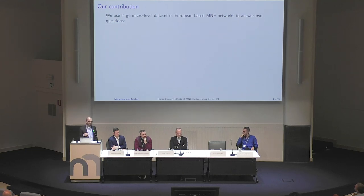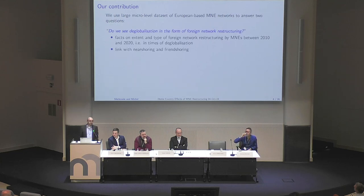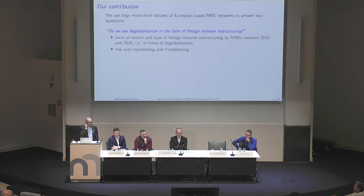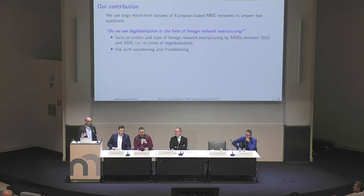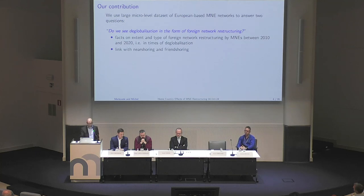We have many results in the paper, but for the sake of time I'm going to distill two questions we can answer using our data. We use a large micro-level data set of European-based multinational networks to answer them. The first question is very simple: do we see some indication of deglobalization in this period from the perspective of these multinational networks? I'll present facts on foreign network restructuring, including a link with near-shoring and front-shoring.